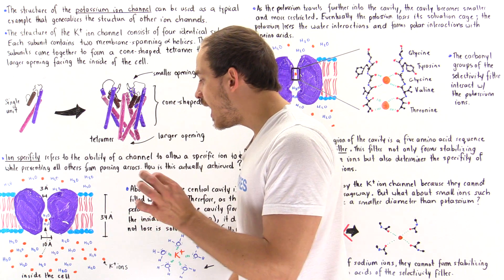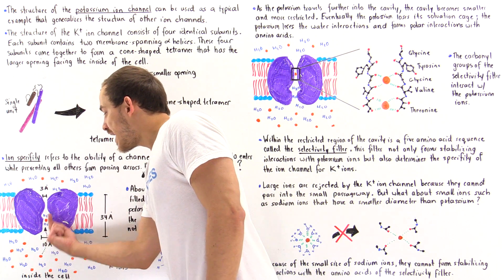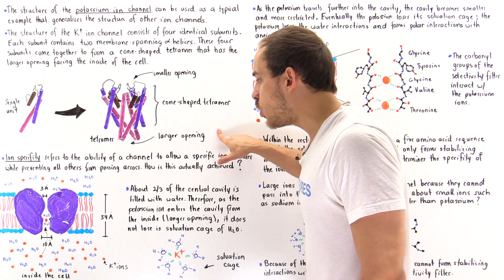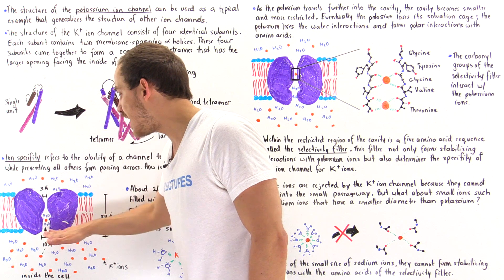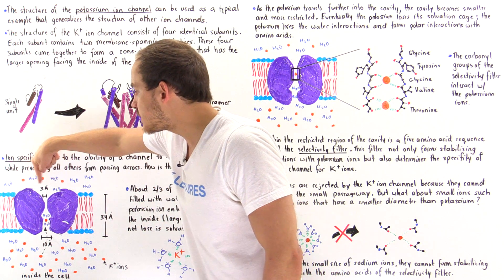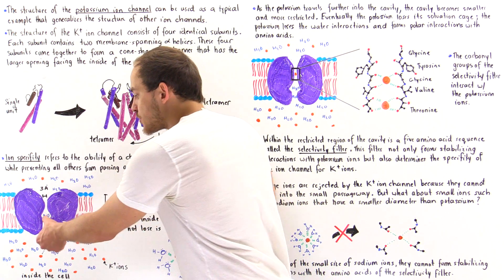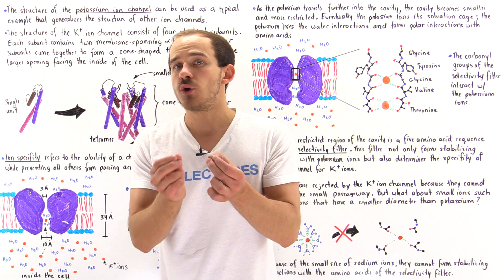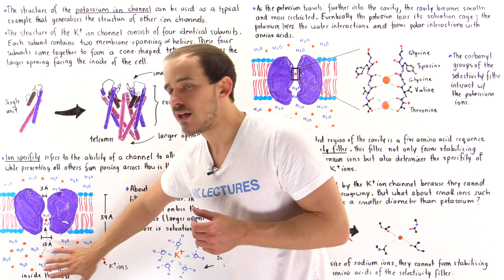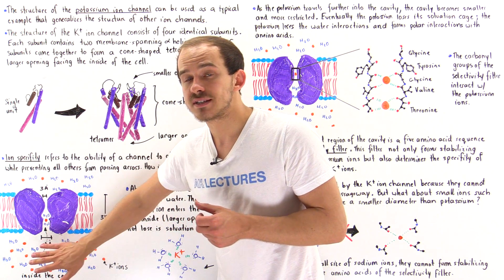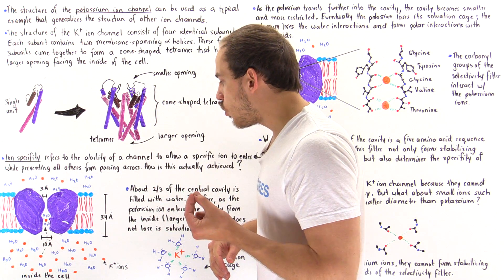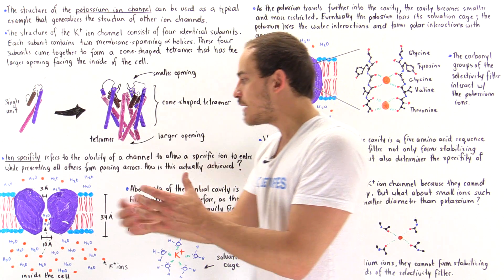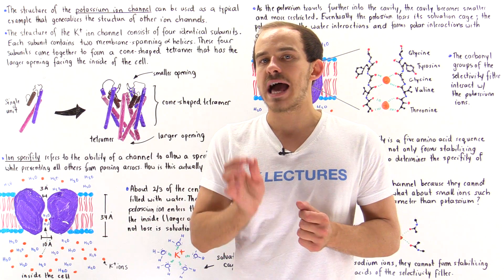Because the protein has a larger opening of about 10 angstroms on the inside, compared to about 3 angstroms on the outside, this internal cavity will have enough space to fit the same water molecules that exist on the cytoplasmic side of that cell. About two thirds of the central cavity is filled with water, creating an aqueous environment — and the question is why that's important.